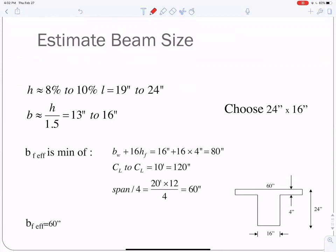8 to 10%, that's one-tenth to one-twelfth of the span length of 20 feet, comes out to 19 inches to 24 inches. And if you take H divided by 1.5, you get anywhere from 13 to 16 inches. I'm going to estimate at 24 by 16. And this is key, this 24 here is to the top of the slab. That means below the slab, when we calculate additional weight, is only 20 inches.